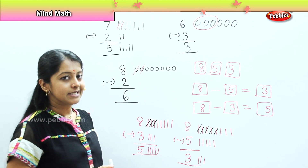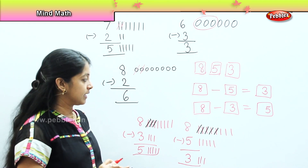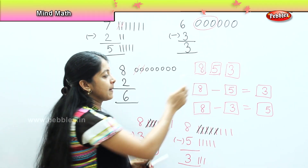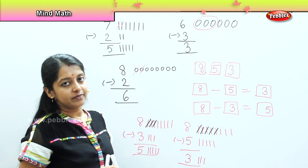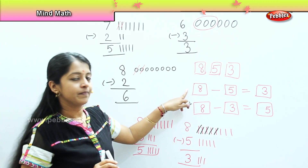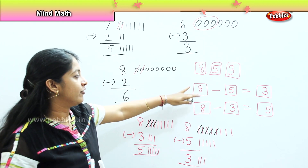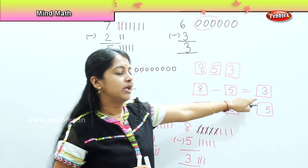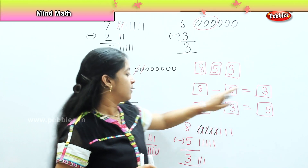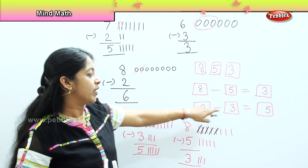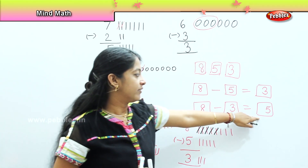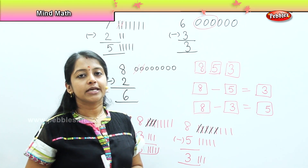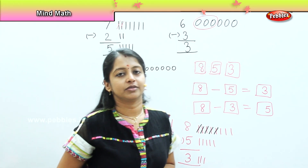Is it clear, children? So what did you understand? The greatest number will always come in the front, in the first place. Eight when reduced by five gives the number three. Similarly, eight when reduced by three gives the number five. I hope you enjoyed doing this.